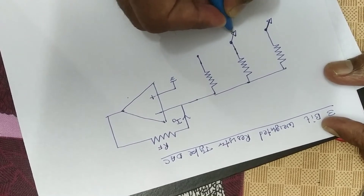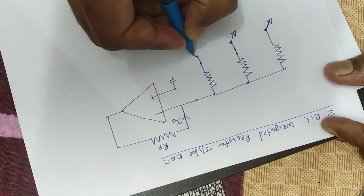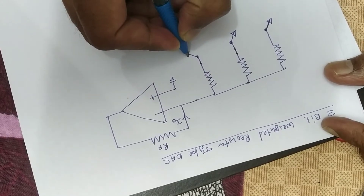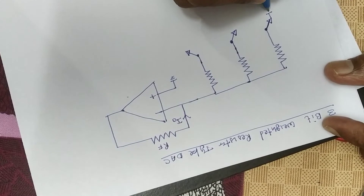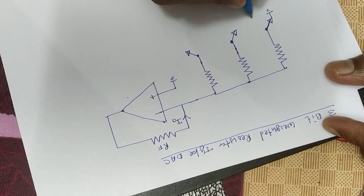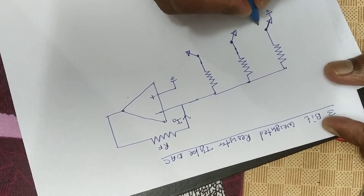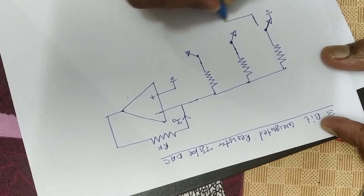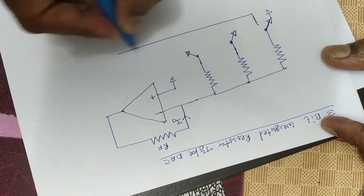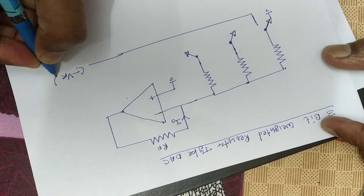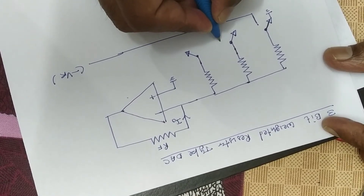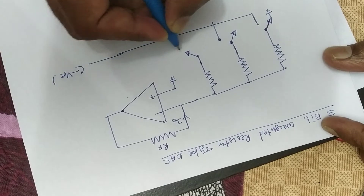If you have a ground connected to zero through switches, and if you have a VR connected, this is your minus VR — the reference voltage.